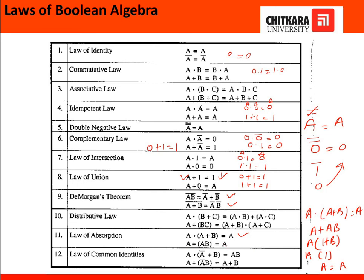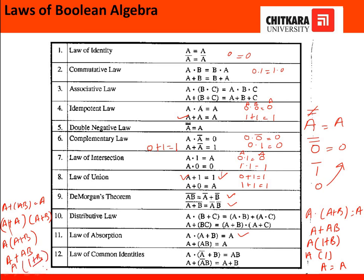Next, a+ab equals a. Expanding using distributive law: (a+a)·(a+b). Since a+a equals a, this gives a·(a+b), which expands to a·a + a·b equals a + ab. Taking a common: a·(1+b). Since 1+b equals 1, the answer is a·1 equals a. Hence it is proved.